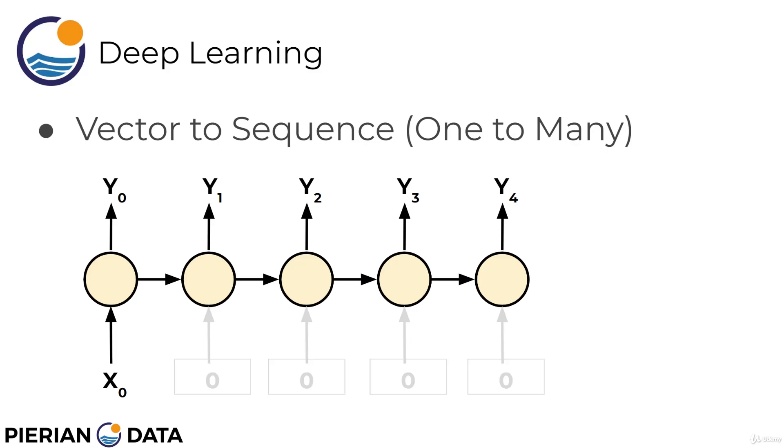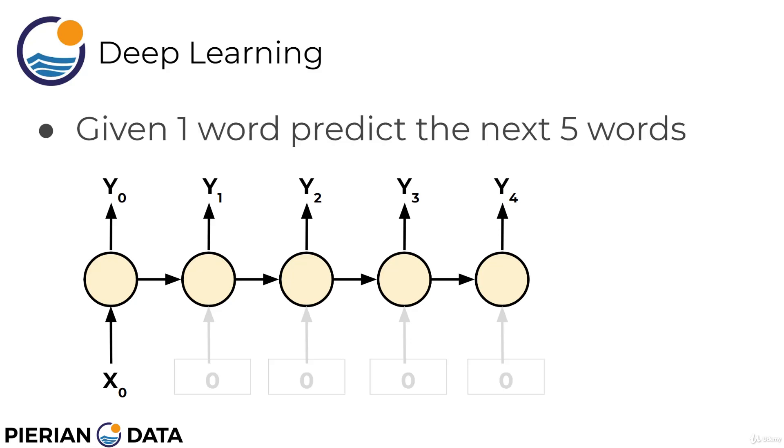Then, there's also vector-to-sequence, one-to-many. So, maybe given one word, go ahead and predict a sequence of the next five words.